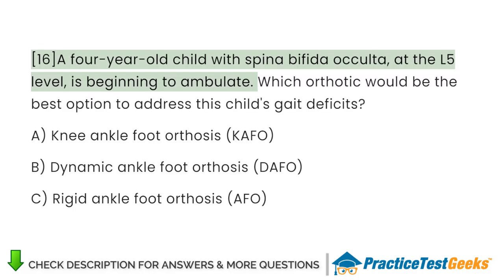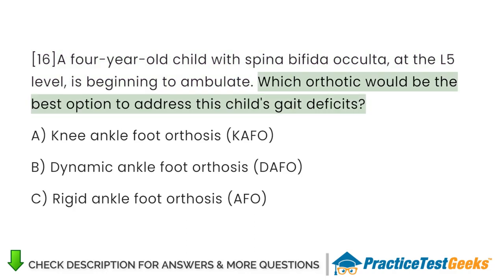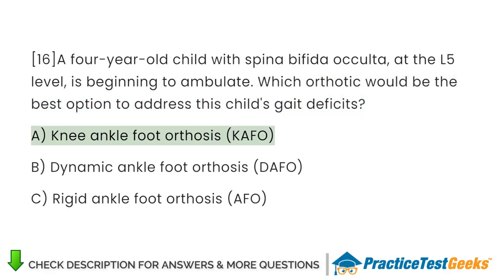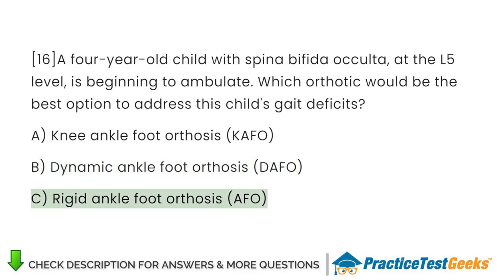A 4-year-old child with spina bifida occulta at the L5 level is beginning to ambulate. Which orthotic would be the best option to address this child's gait deficits? A. Knee-ankle-foot orthosis, KAFO. B. Dynamic ankle-foot orthosis, DAFO. C. Rigid ankle-foot orthosis, AFO.